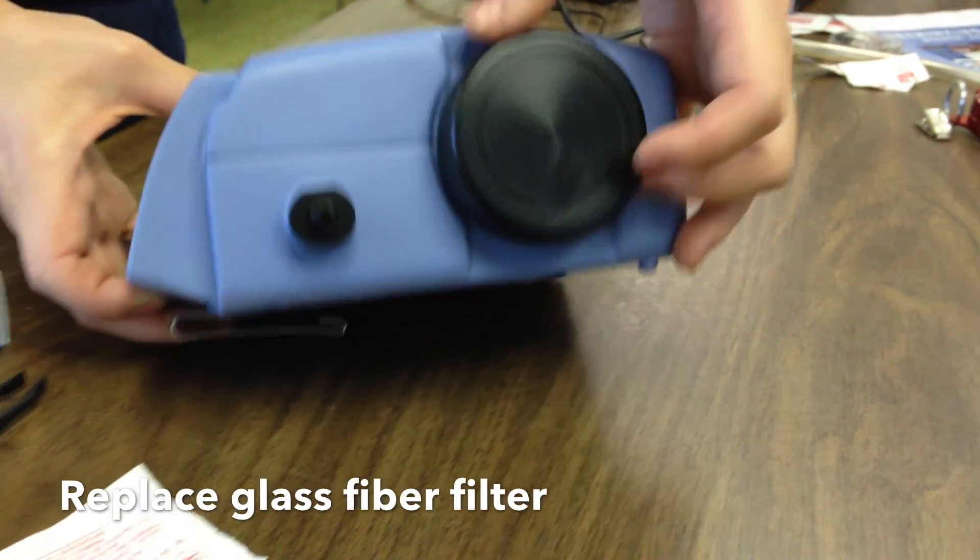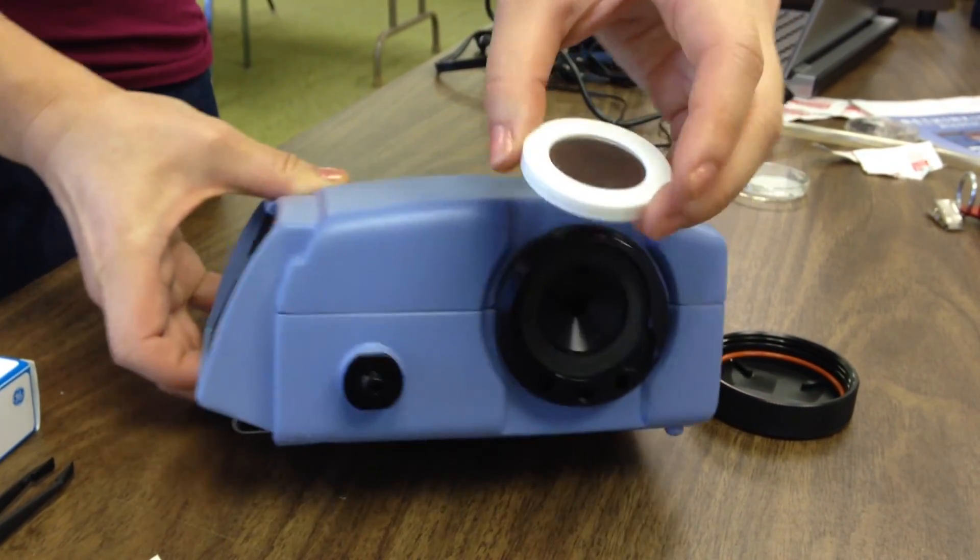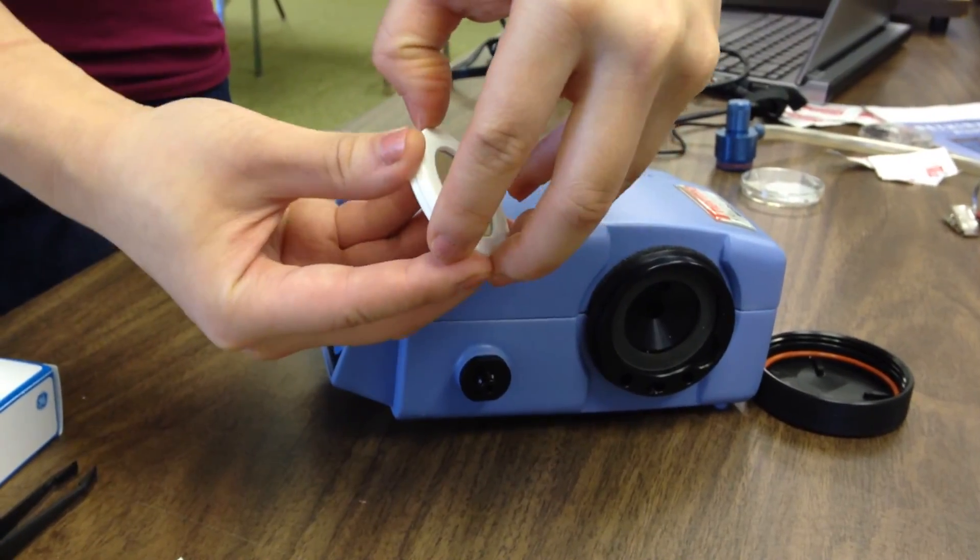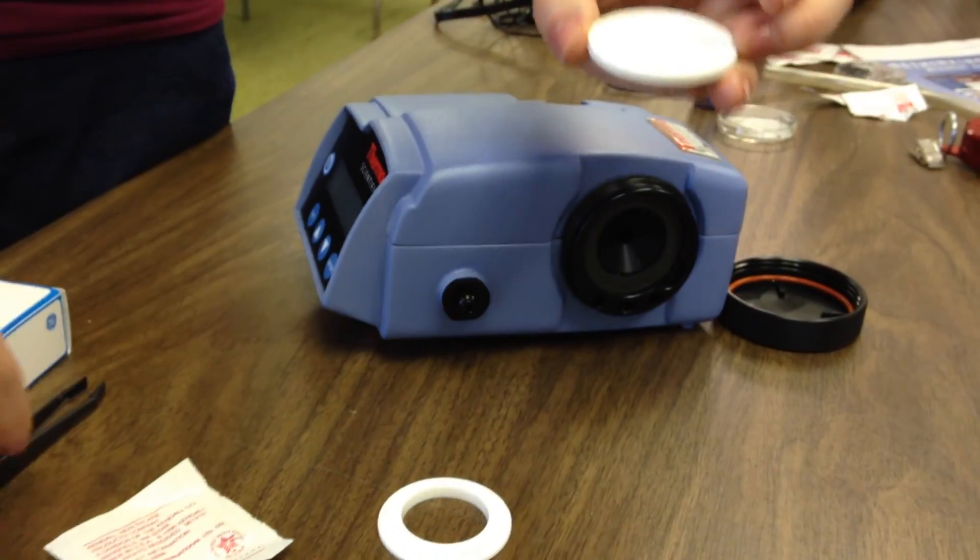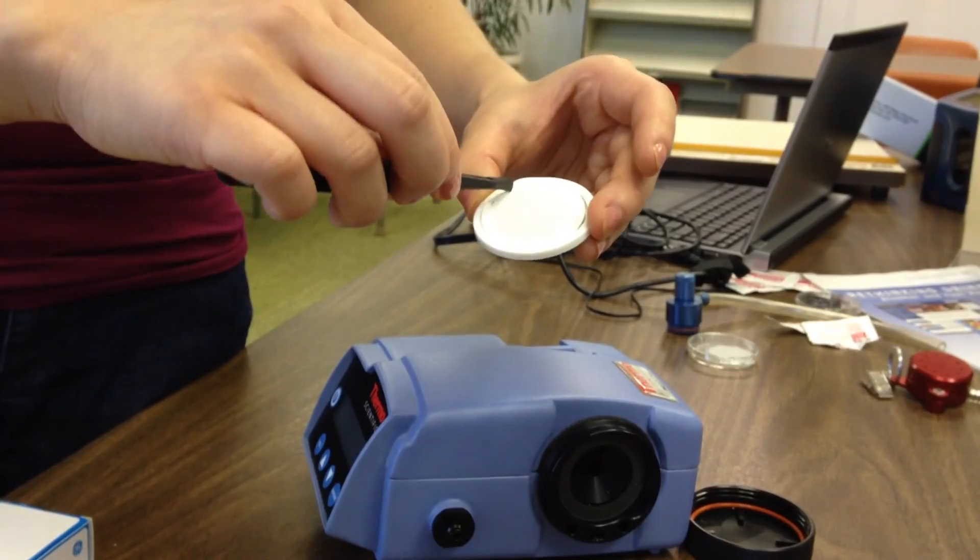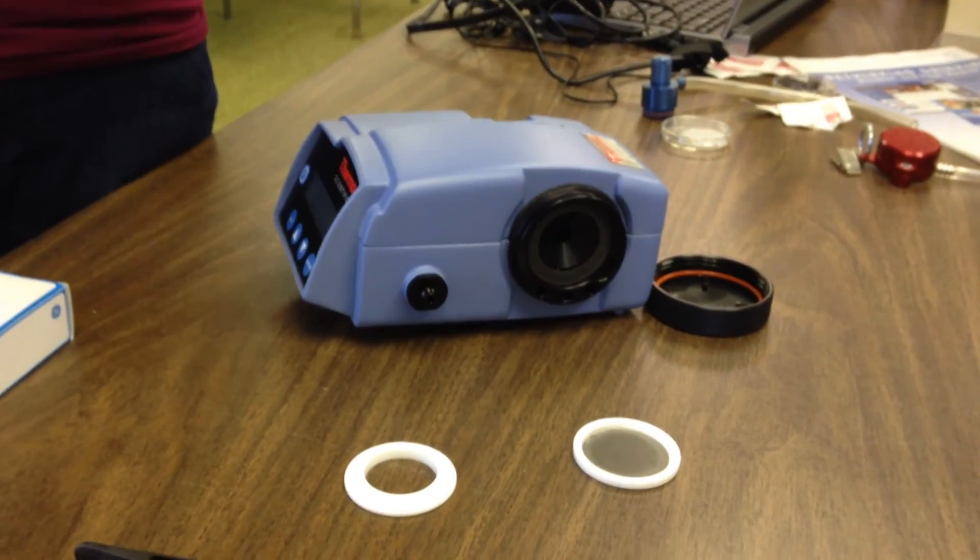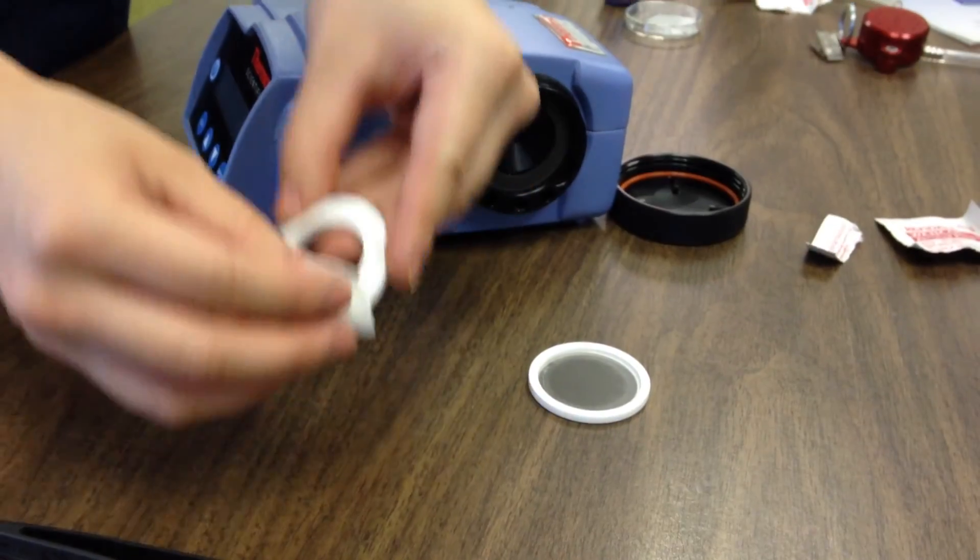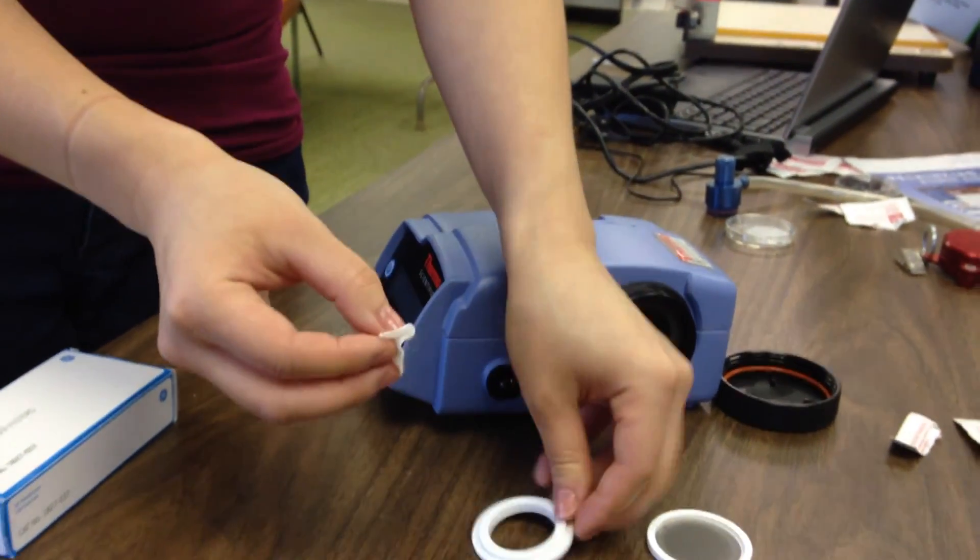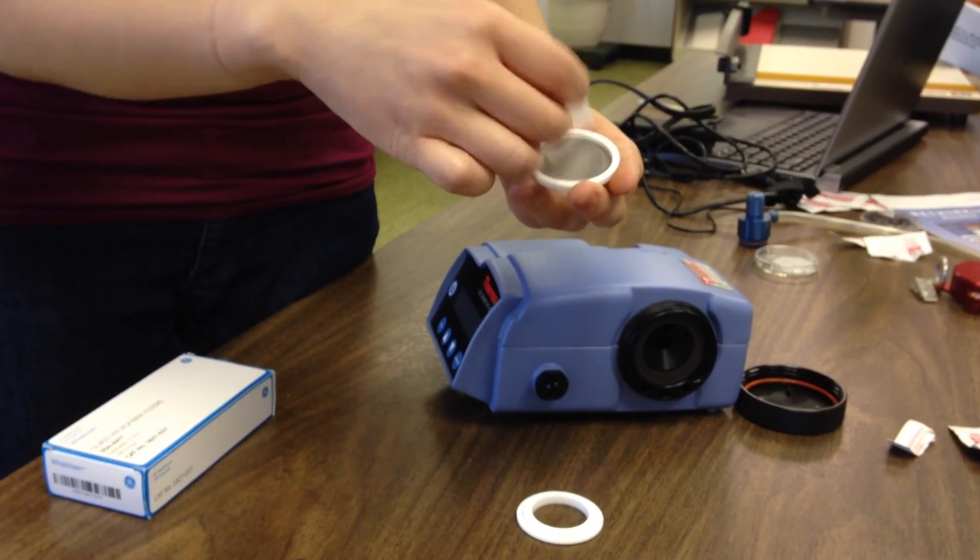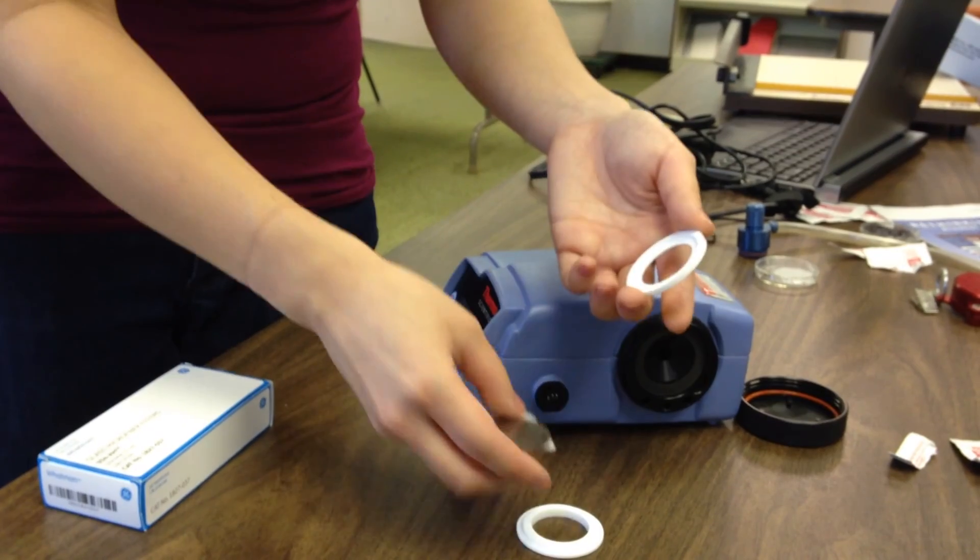Before air monitoring, the glass fiber filter must be replaced. Unscrew the cap on the side of the PDR and remove the filter holder. Remove the old glass fiber filter with tweezers. Clean your filter holder by using an alcohol prep pad. Thoroughly wipe the top and bottom cassette rings as well as both sides of your filter support screen.